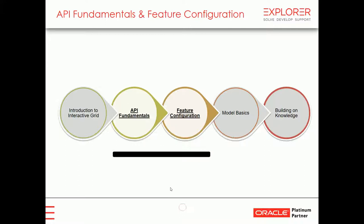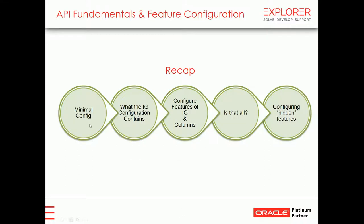To recap API fundamentals and feature configuration: we saw the minimal config — function(options){ return options; }. By console logging options we saw what the configuration contains. We configured features at Interactive Grid level and at column level. We asked the grid for all its settings to find hidden features, and we configured text, toolbar information, and other options.